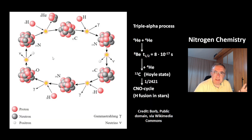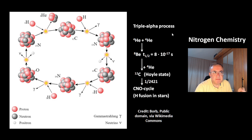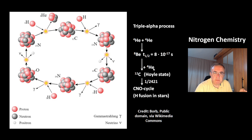This is the nucleosynthesis of the three Nitrogen isotopes. The first step is the triple alpha process — the reaction of helium-4 isotopes to beryllium-8, which merges with another helium-4 isotope. Then you get carbon-12 in the Hoyle state, and this carbon can eventually enter the CNO cycle.